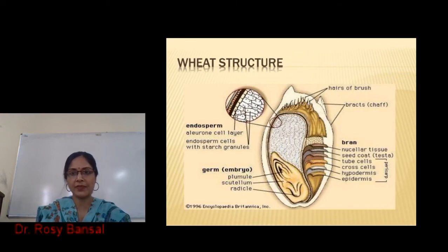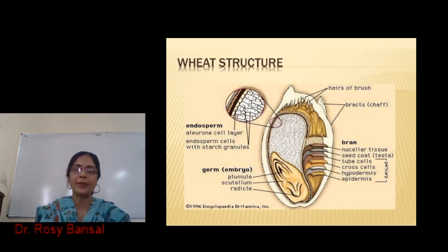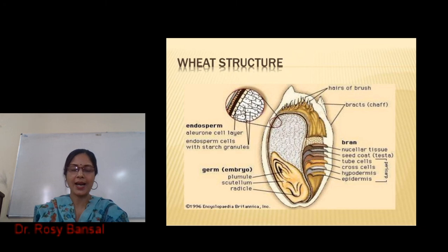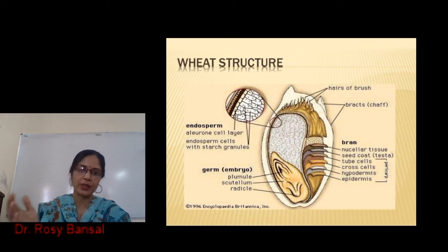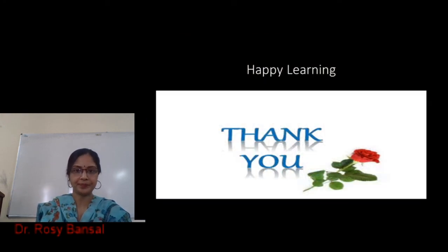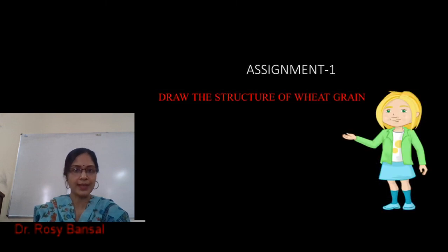In our next module, we will discuss all the layers in the bran, the types of cells present in the endosperm, and the three parts of the germ: the plumule, which gives rise to the shoot; the radicle, which gives rise to the root; and the scutellum, which separates the germ from the endosperm and mobilizes all the nutrient components from the endosperm to the germ during growth. For your assignment, please draw the structure of the wheat grain. Thank you, and have happy learning.